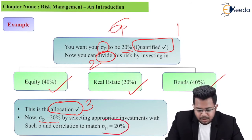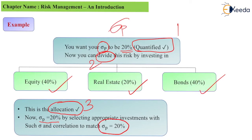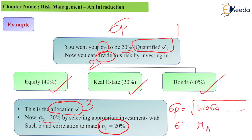Sigma p equals 20% by selecting appropriate investments with such standard deviation and correlation that sigma p matches 20%. If you remember from portfolio risk and return parts 1 and 2, sigma p equals the root of wa, sigma a, wb, sigma b, and so on — that big formula. There, one thing was sigma and one thing was the correlation between a and b. Basically, you select stocks or investments with such standard deviation and such correlation that your final answer comes down to 20%. This is known as risk budgeting.